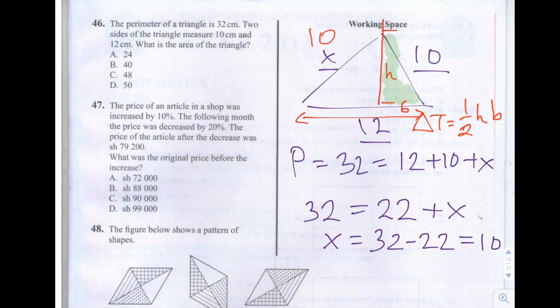And we know that this 10 is also the hypotenuse. So we can use Pythagoras' theorem, A squared is equal to B squared plus C squared, to find out H.